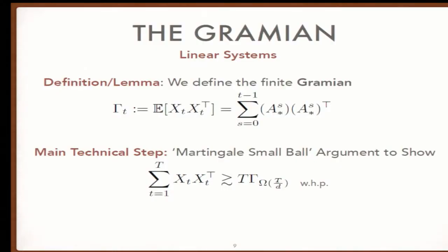The key technical step is adapting Mendelssohn's small ball method for martingale processes. We show a PSD lower bound that the covariance matrix is dominated by T times the Gramian evaluated at about T over D. This shows that as the Gramian grows over time and hits its limit, it gives us a nice lower bound on the covariance structure. That's the key technical tool to prove the results.